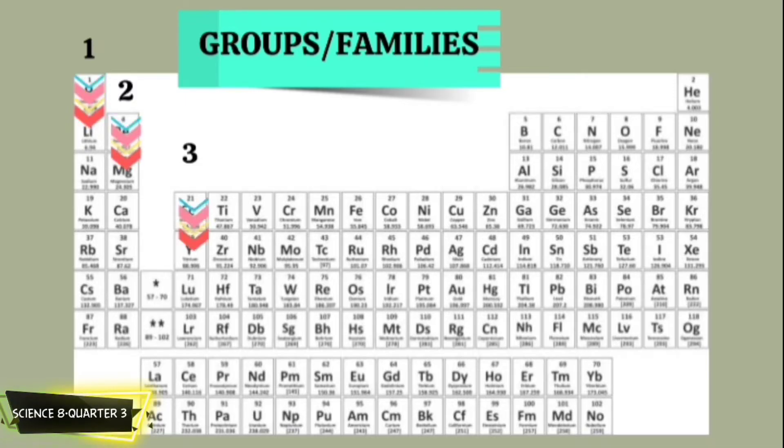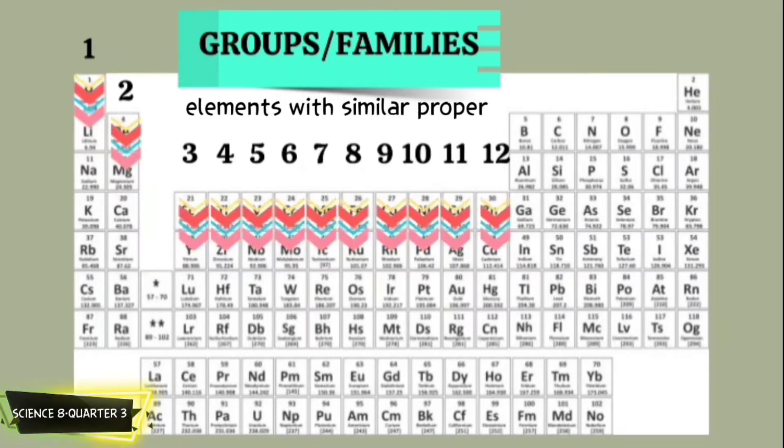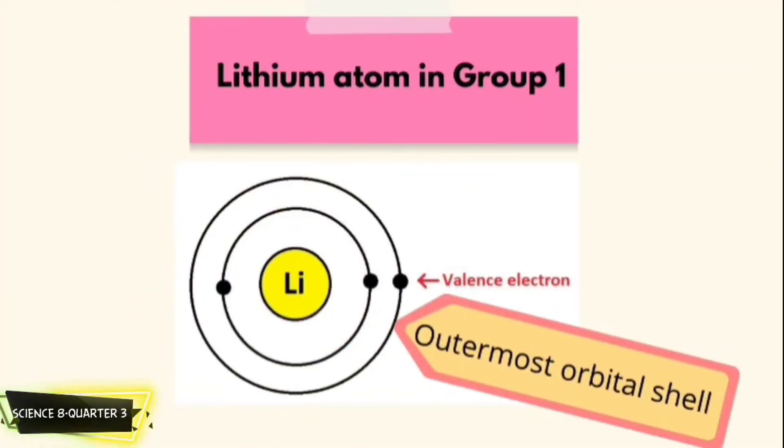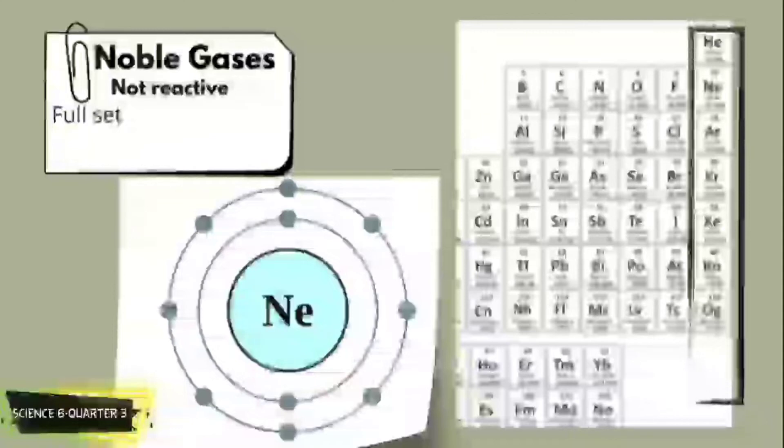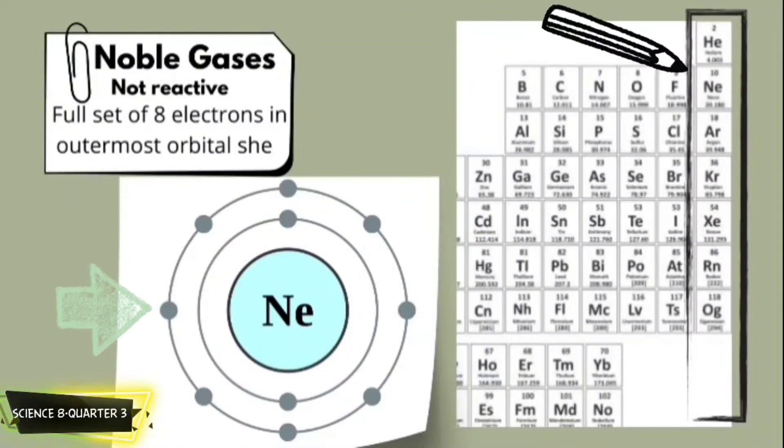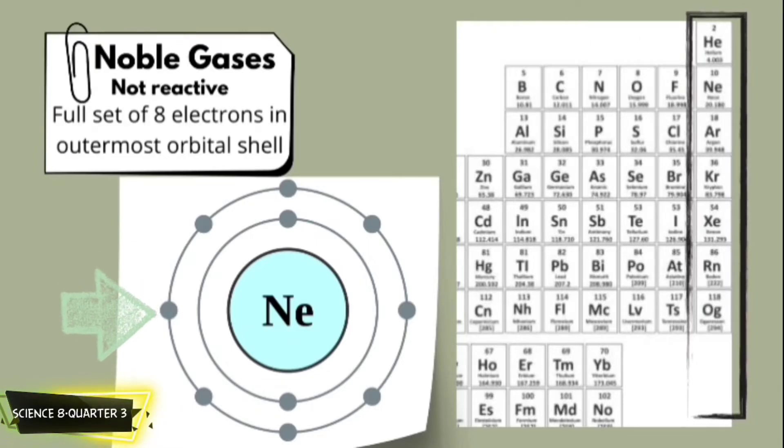The columns of elements are called groups or families. A group contains elements with similar properties. Elements within a group share a valence electron configuration or those electrons in the outermost orbital shell. As an example, elements in group 8A all have a full set of 8 electrons in the highest energy orbital. For instance, all the group 18 elements are inert gases, meaning they don't react with other elements.